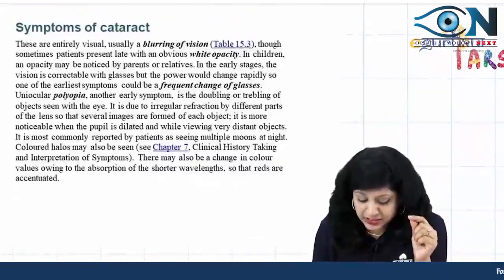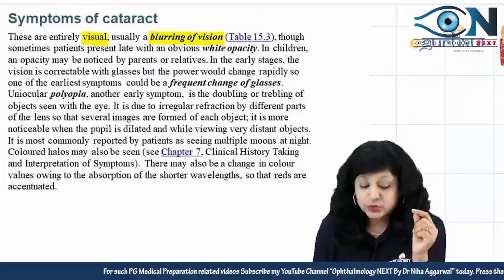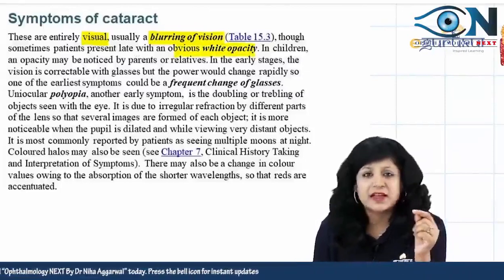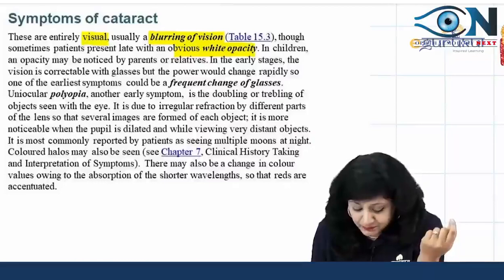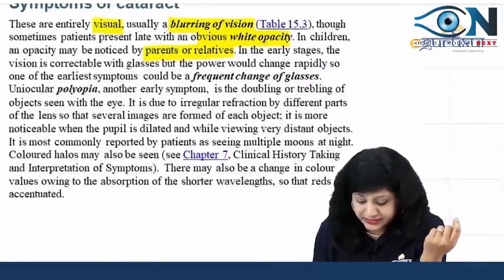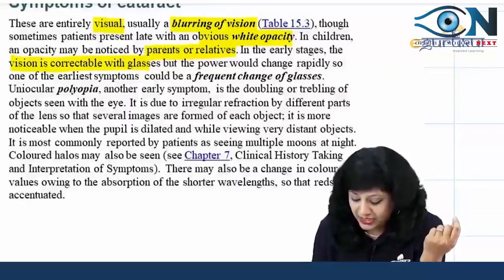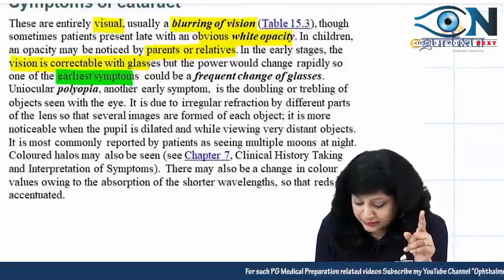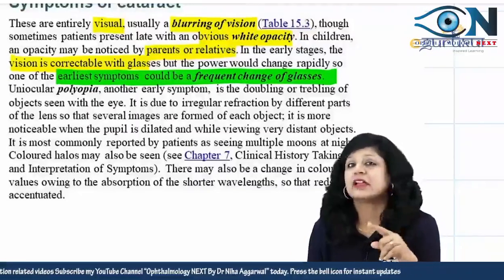Now let us see the symptoms of cataract. These are entirely visual — usually a blurring of vision, though sometimes patients present late with an obvious white opacity. Most of the time they are coming with some visual complaint. In children, opacity may be noticed by the parents or relatives. In the early stages, the vision is correctable with glasses but the power would change rapidly. One of the earliest symptoms of cataract is the frequent change of glasses.